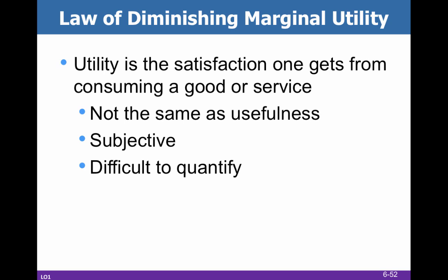We're going to start talking about the law of diminishing marginal utility. We're basically dealing with the idea of satisfaction that we get when we consume. Remember that utility and usefulness are not the same — there are plenty of things that are not useful but still give us a lot of utility or satisfaction. It's subjective, meaning we might disagree on how much utility we gain from a particular thing, and it can be difficult to quantify. Things like happiness or satisfaction just don't lend themselves to being quantified all that well.